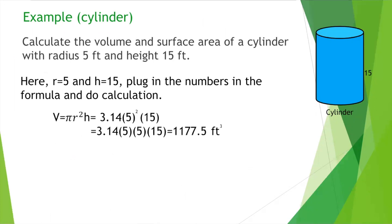For volume, the formula is pi r squared h. Pi is always 3.14, r is 5, so r squared is 25, and height is 15. So 3.14 times 5 times 5 times 15. Using a calculator, we get 1177.5 feet cubed. It is a 3D figure so the unit is cubic feet — feet squared times feet gives feet cubed.